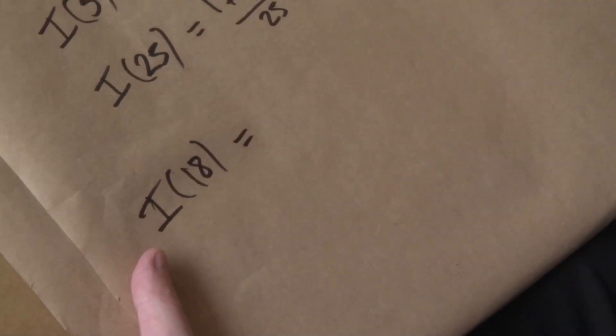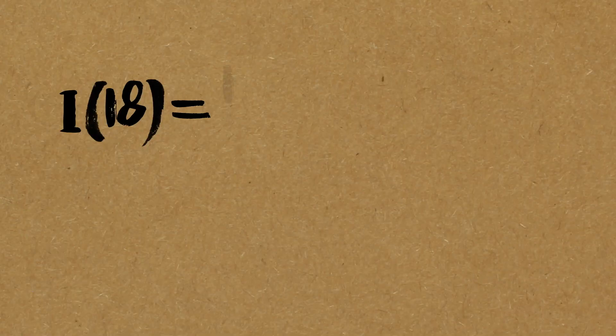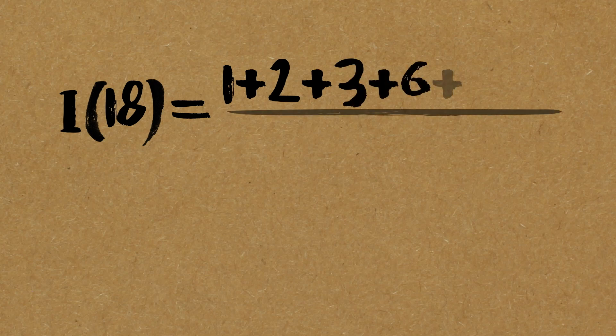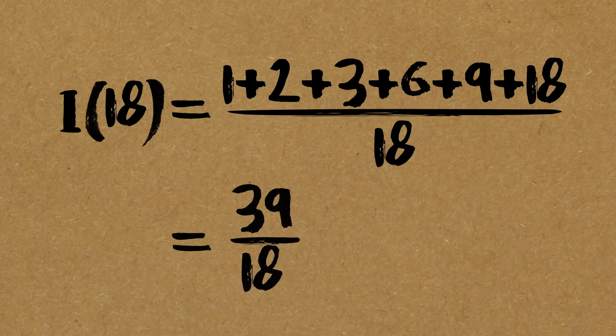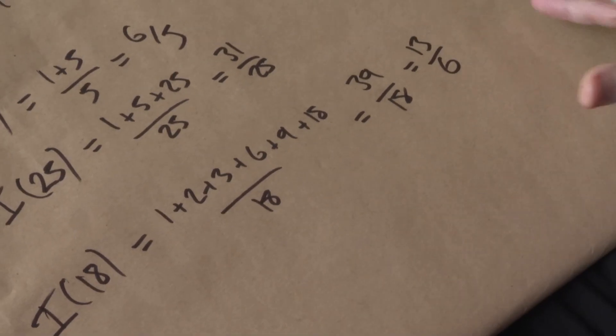There are solitary numbers that break that rule. 18 is an example: factors are 1 plus 2 plus 3 plus 6 plus 9 plus 18, divided by 18, giving 39 over 18, which cancels to 13 over 6. So it breaks that rule, but 18 is solitary — and that's been proven by hand. It turns out that another number with the same index would have to be a multiple of 18, and if it is, it has a larger index — therefore it doesn't exist. 18 is solitary.